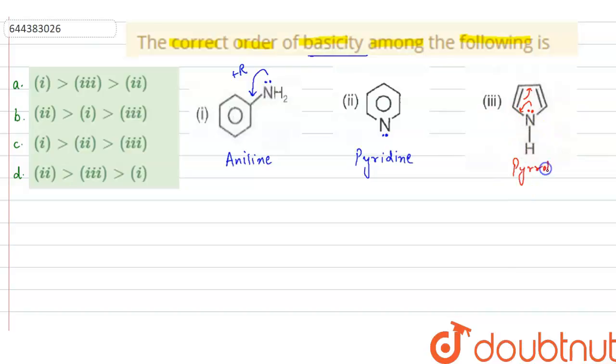So in pyrrole also electrons are involved in conjugation. So it means here pyridine will be the most basic among these three molecules. So its basicity will be high because these electrons are available for protonation.